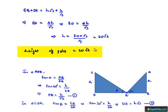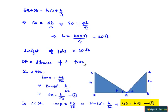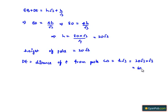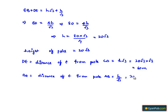We need to find the distance of point E from both poles. DE is the distance of point E from pole CD, equal to H root 3, which is 20 root 3 into root 3, that is 60 meters. BE is the distance of point E from pole AB, equal to H by root 3, which is 20 root 3 by root 3, that is 20 meters.